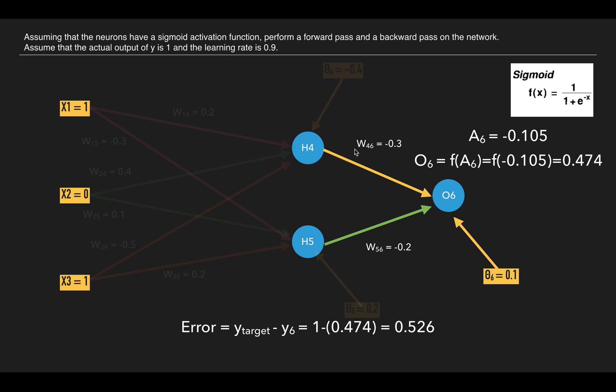When we pass these two values which we previously calculated with the associated weights, we can get the output for the 6th output node, that is minus 0.105, and then we can pass this value to our sigmoid function. And we will get 0.474 as the value.